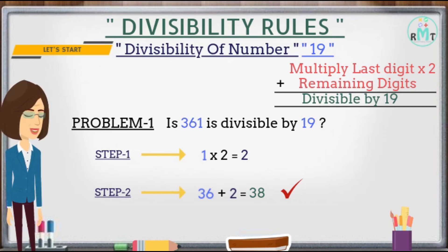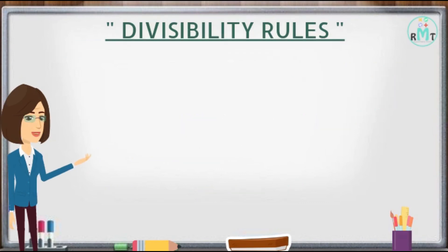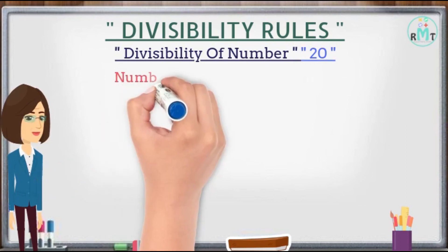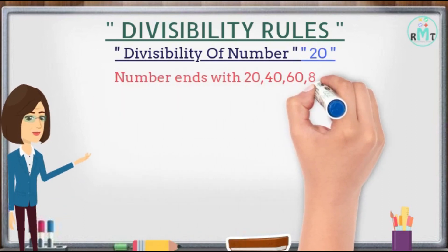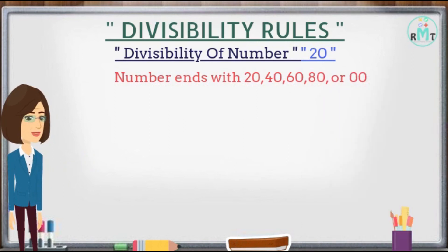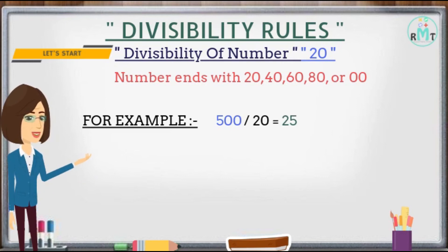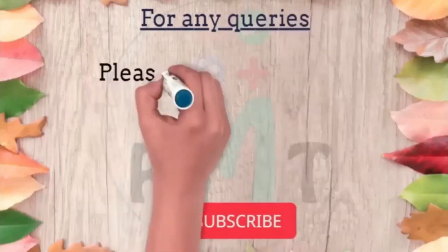Now we will check the divisibility rule for number 20: a number is divisible by 20 only if the number ends in 20, 40, 60, 80, or 00. For example, 500 is completely divisible by 20 as it ends with double zero.